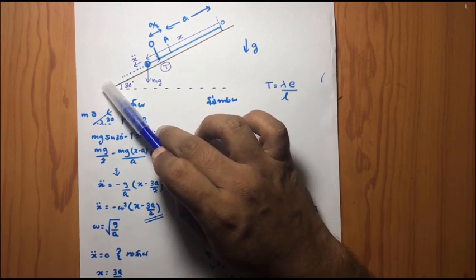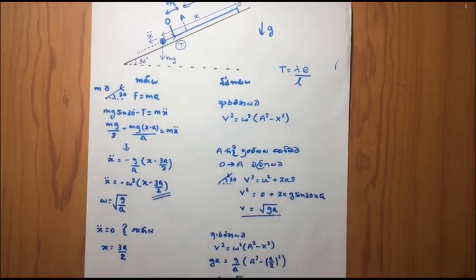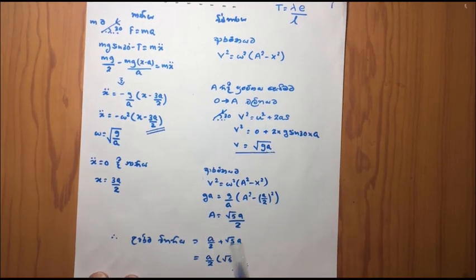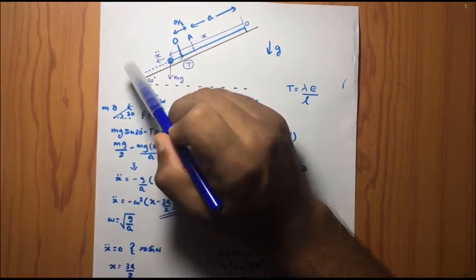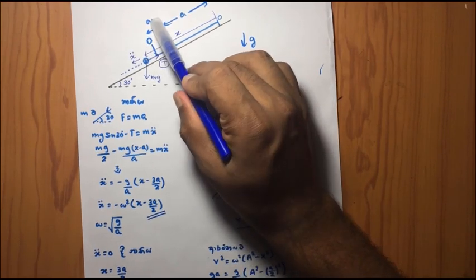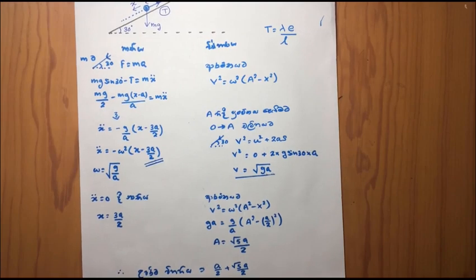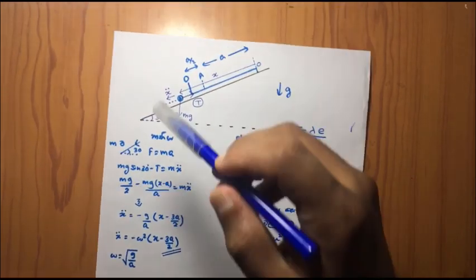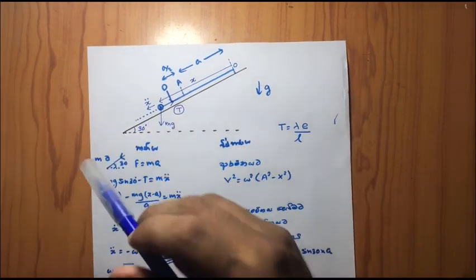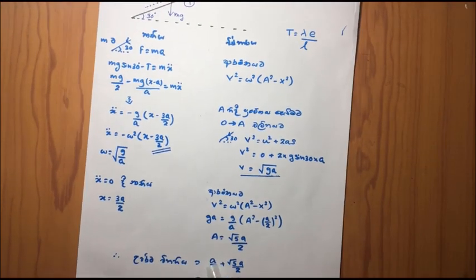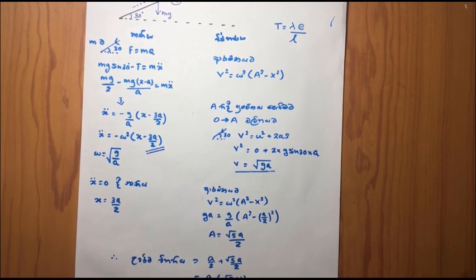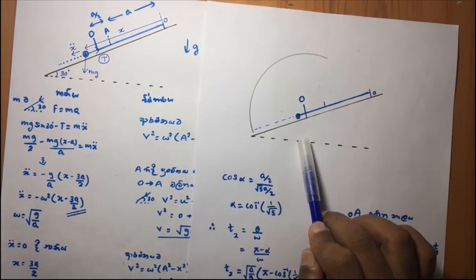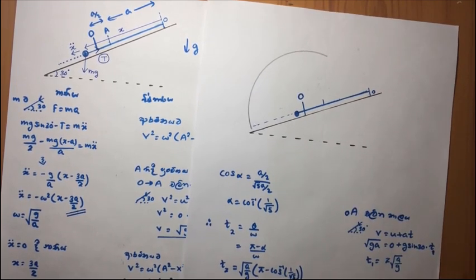The most important thing is that the capital is the capital. The capital is now the capital. This is the capital. If we look at the first place on the line, we will see the name of the line. Here we are going to see the new line.